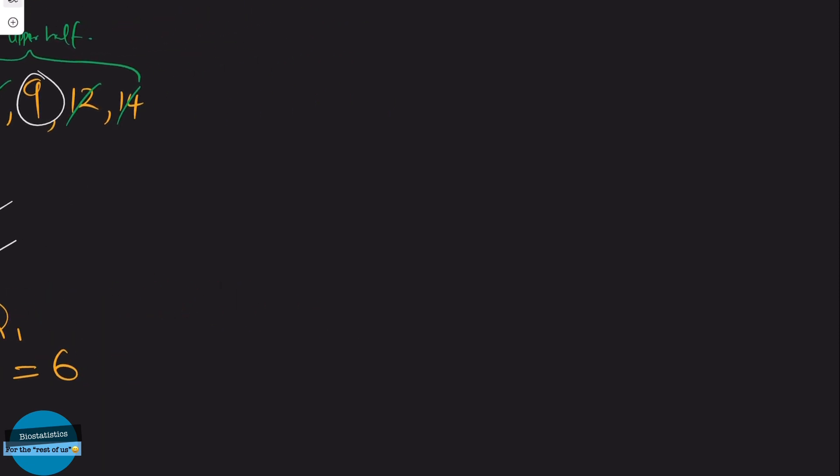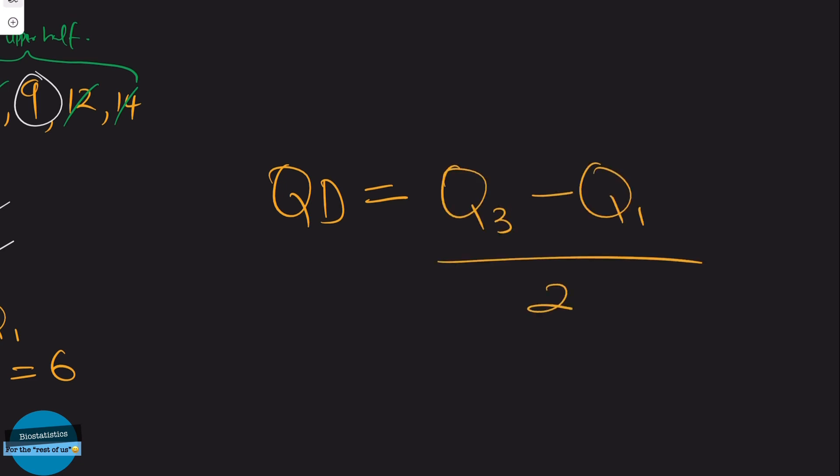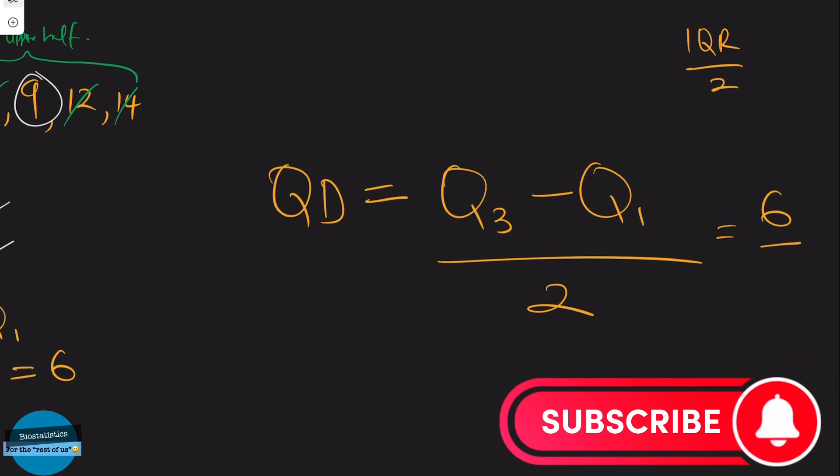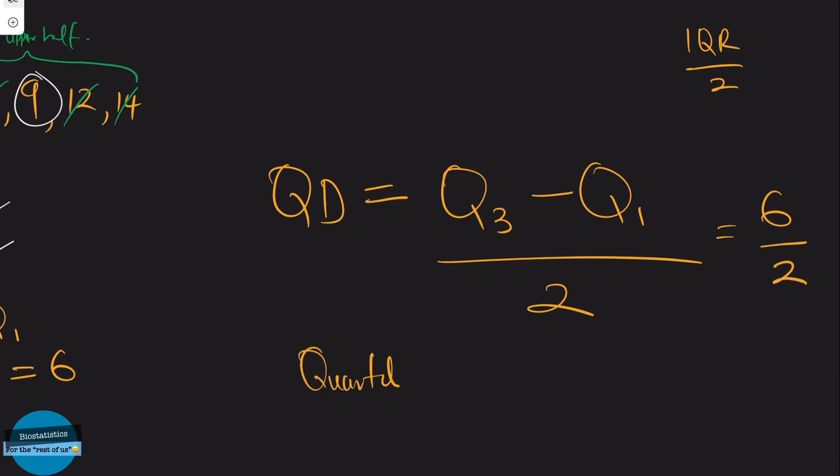Now let's quickly go on to the last step, which is to compute the semi-interquartile range or the quartile deviation. Remembering our formula, quartile deviation QD equals Q3 minus Q1 all over 2, or the interquartile range divided by 2. And that will give us 6, our interquartile range is 6, divided by 2, and we'll have 3. So our quartile deviation is 3 years.